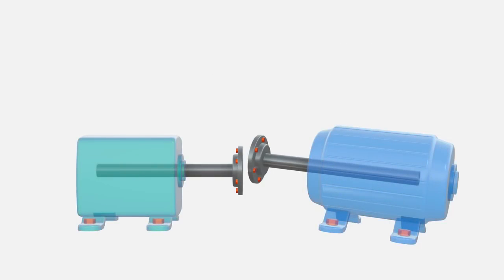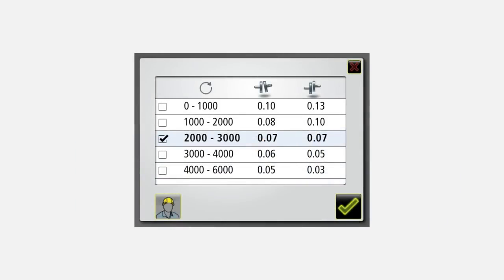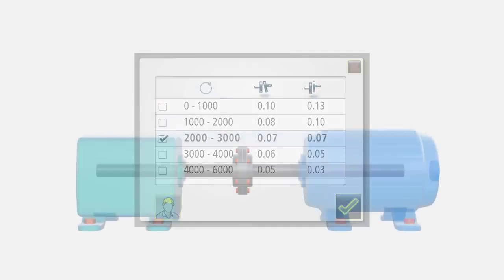For this reason, manufacturers of rotating equipment have established tolerances, defining the maximum acceptable levels of angular and offset misalignment for their machines.